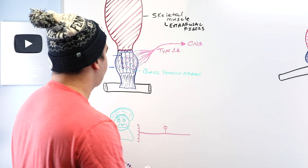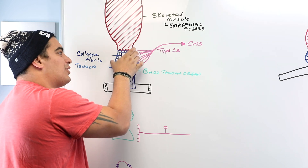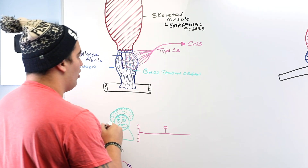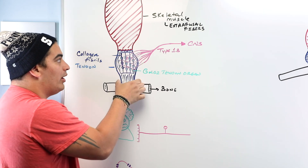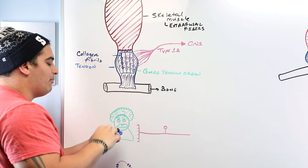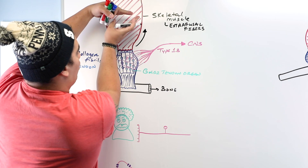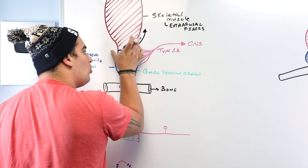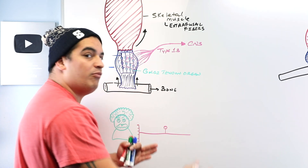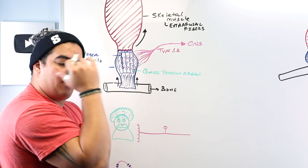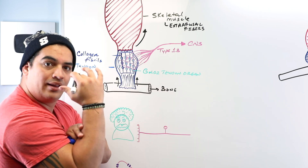The extrafusal fibers of skeletal muscle connect with the tendon, which in turn connects to the bone — a little interconnecting rope between the muscle and the bone. Whenever a muscle contracts, it generally shortens, pulling on the tendon, which pulls on the bone and generates movement. For example, when the biceps muscle contracts, it pulls on the bicipital tendon and brings the forearm up.